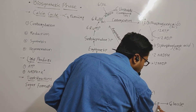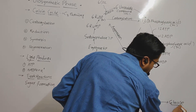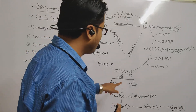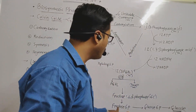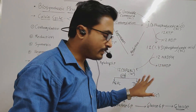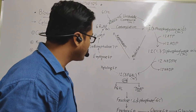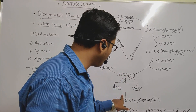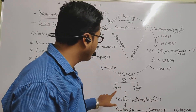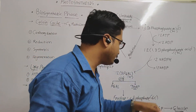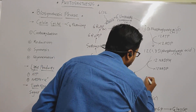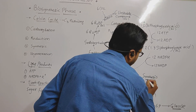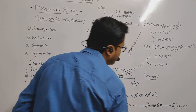Glucose 6-phosphate is then converted into the last product of the Calvin cycle — glucose. This entire process is called the reverse of glycolysis. The aldolase enzyme used here is important to remember. This whole process from PGAL to glucose constitutes the synthesis phase of the Calvin cycle.